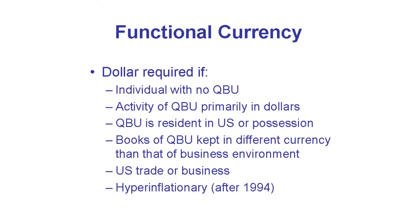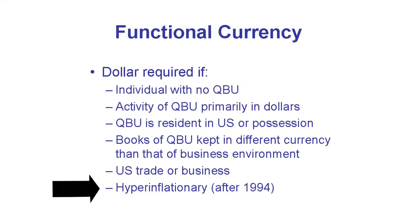For US tax and financial reporting, the P&L and balance sheet of the German company are then translated to dollars using average and year-end rates. The dollar must be used as a QBU's functional currency if the QBU's activity is mostly in dollars. The dollar is also required for US individuals with no QBU, for a QBU in the US or for a US trade or business, and for a QBU or entity whose primary currency is hyperinflationary. A similar requirement to use the top parent's reporting currency applies for books.